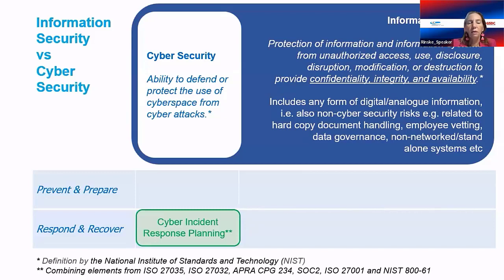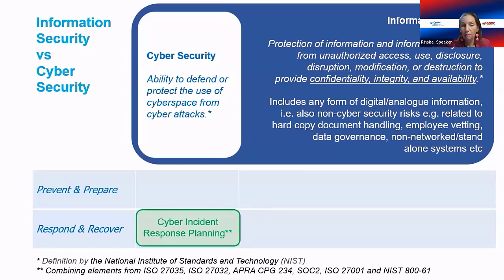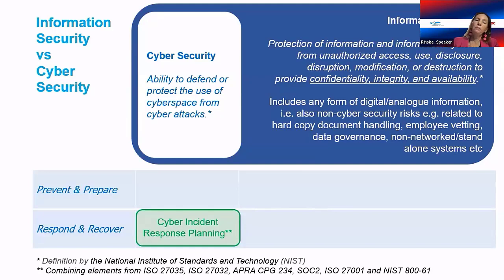There are four stages: prevent, prepare, respond, and recover. Prevent and prepare happen before an incident; respond and recover happen during one. The Cyber Security Incident Response Plan — CSIRP — covers the response and recovery phases specifically for cyber security events.